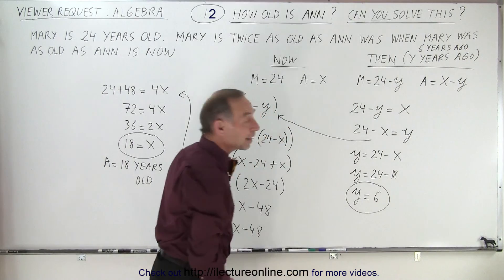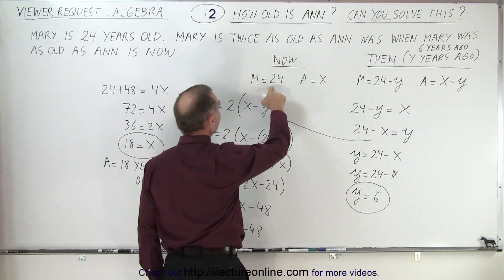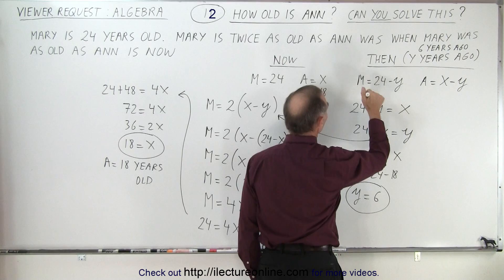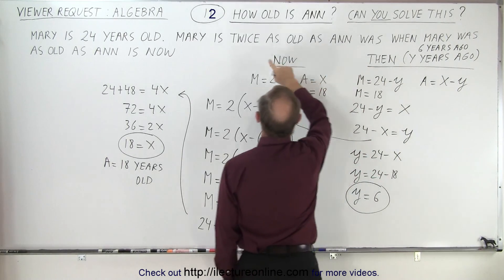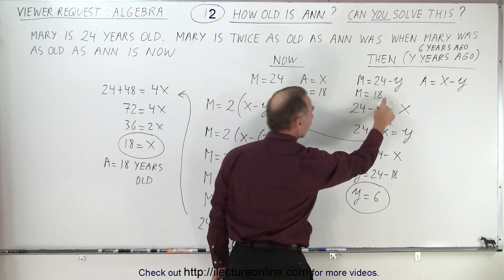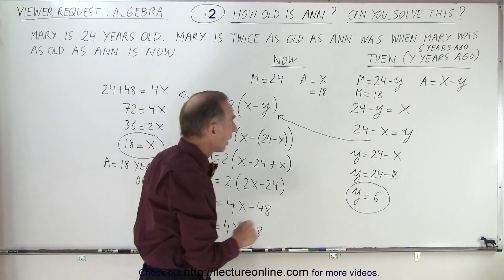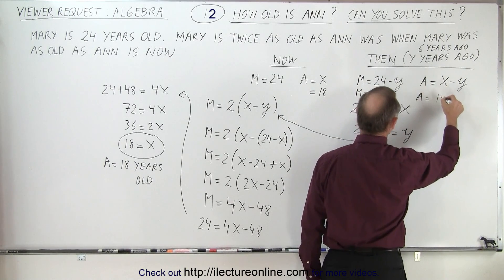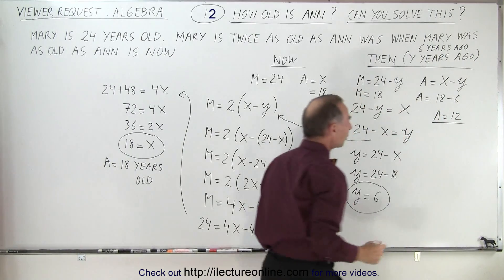And now let's see if it makes sense. So if Mary is 24 years today, Anne is 18 years today, and so Mary 6 years ago was 18. So that makes sense because here we say Mary is twice as old as Anne was when Mary was as old as Anne. So Mary was as old as Anne is now, so that makes sense. And over here 6 years ago Anne was X which is 18 minus Y which is 6, so 6 years ago Anne was 12 years old.